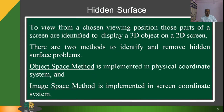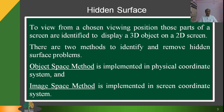To remove these problems, we have some methods. Most commonly, there are two methods for removing hidden surface problems. One is known as the object space method, while the other is the image space method. The object space method is implemented in a physical coordinate system, and the image space method is implemented in a screen coordinate system.